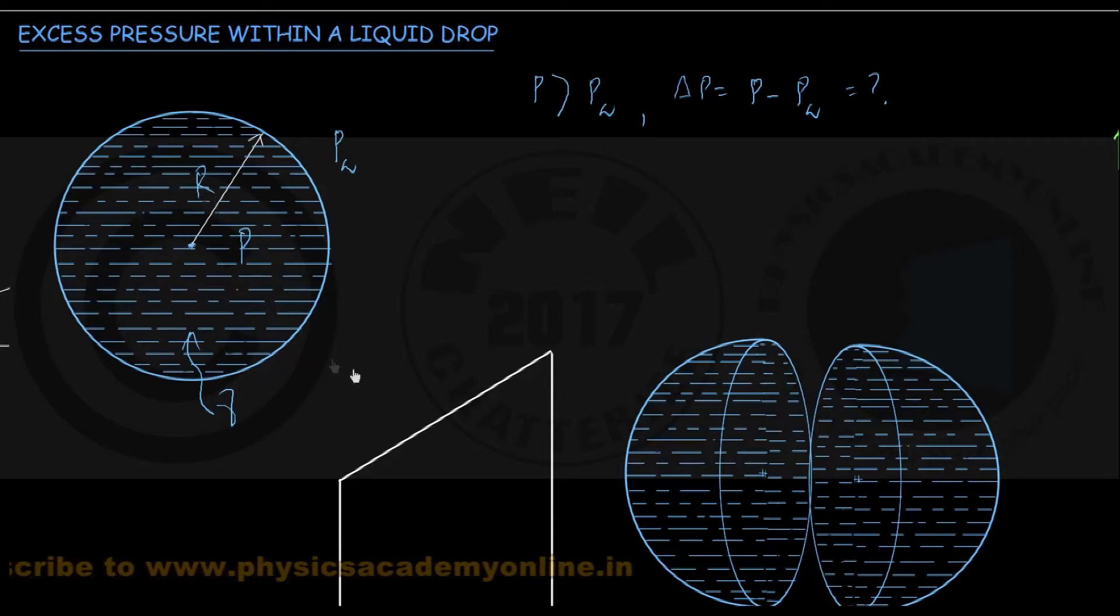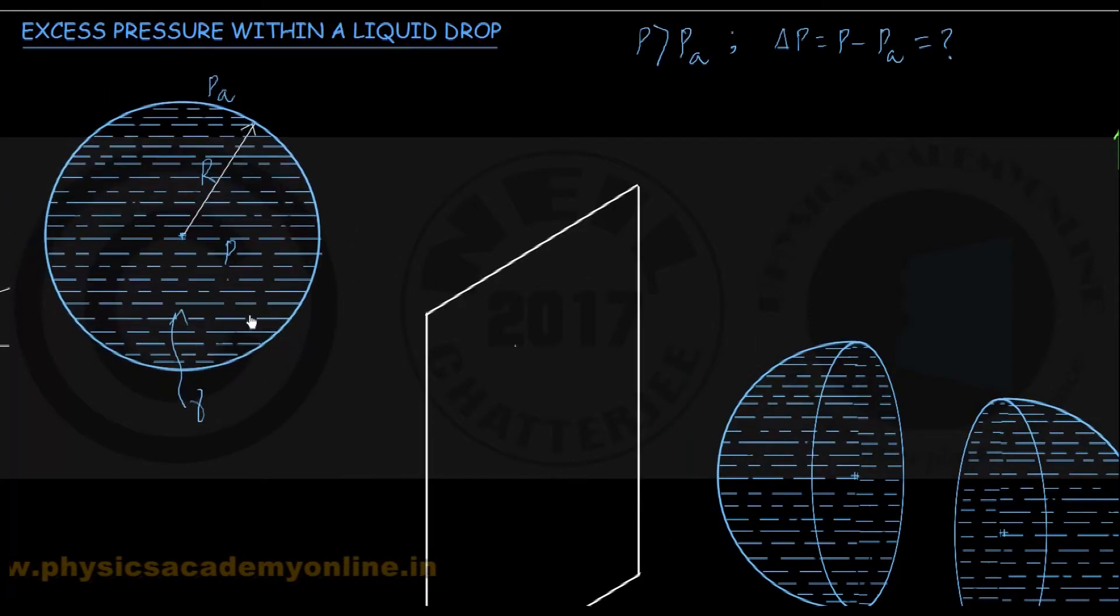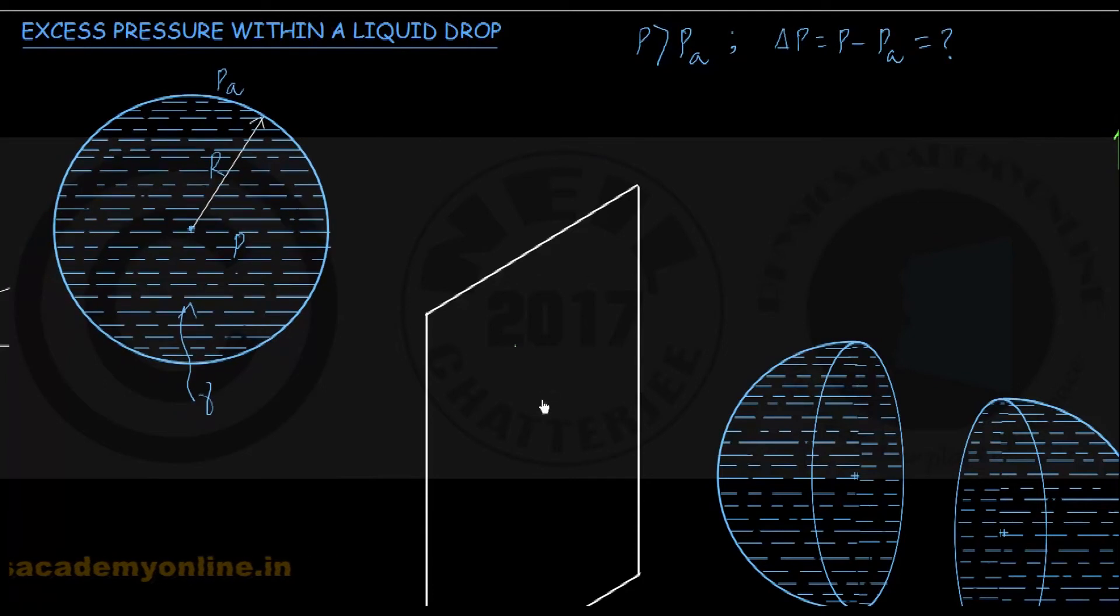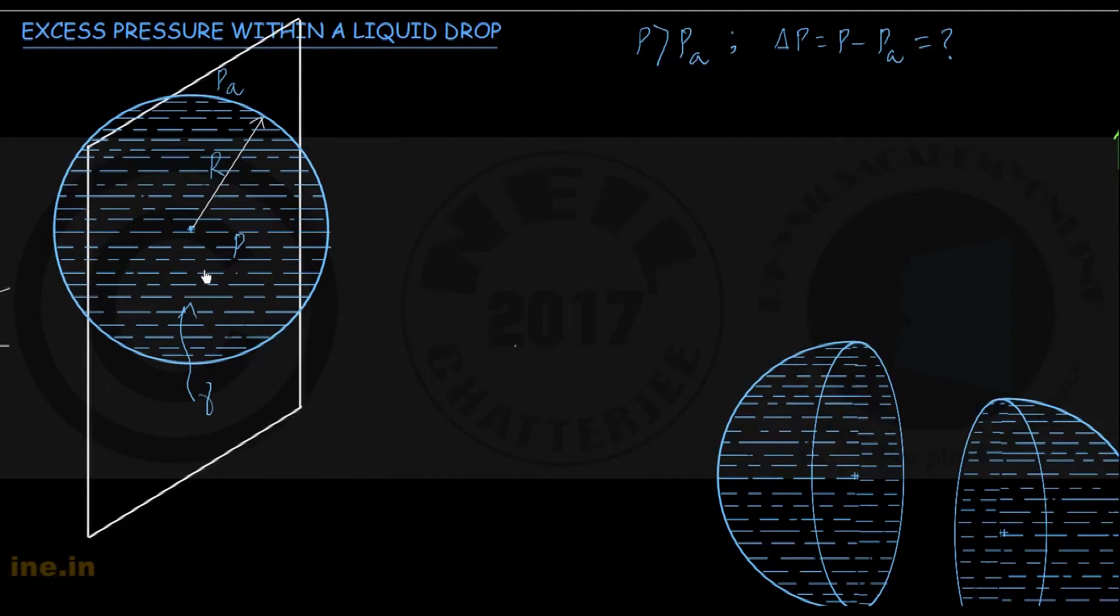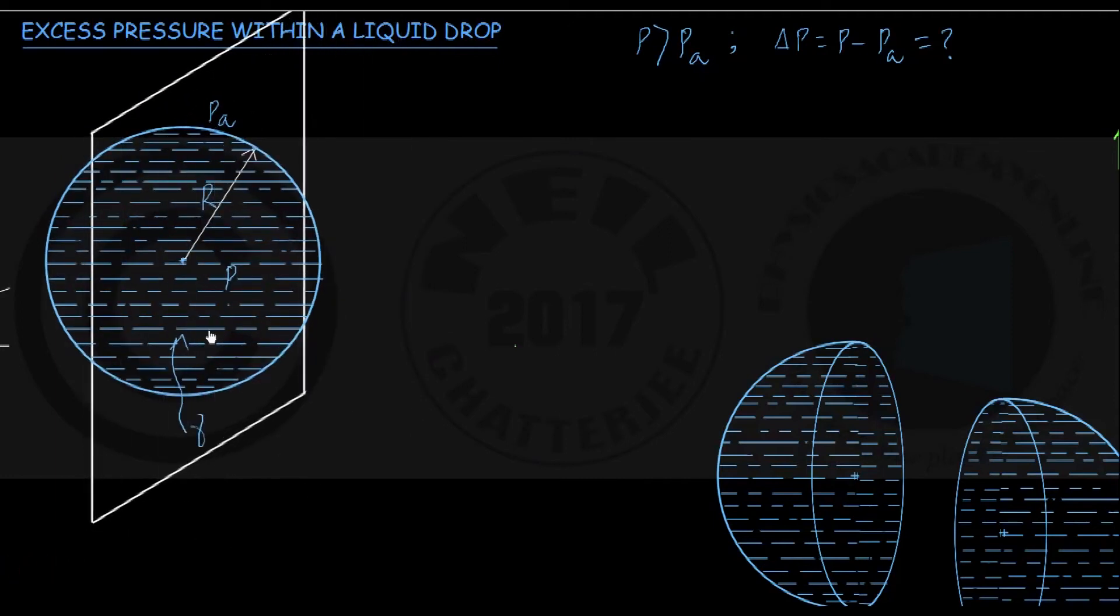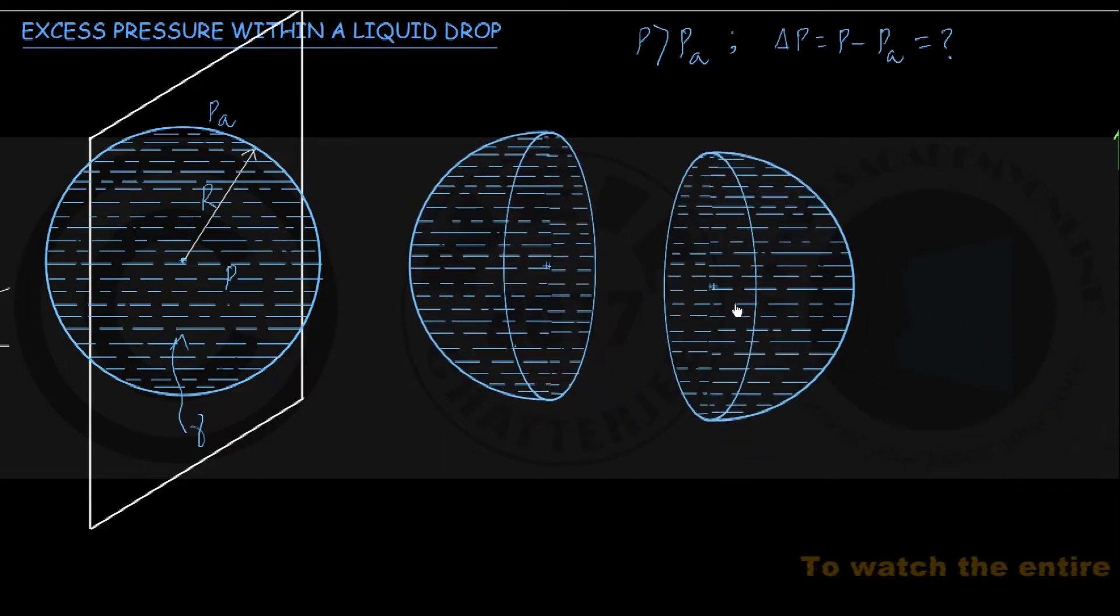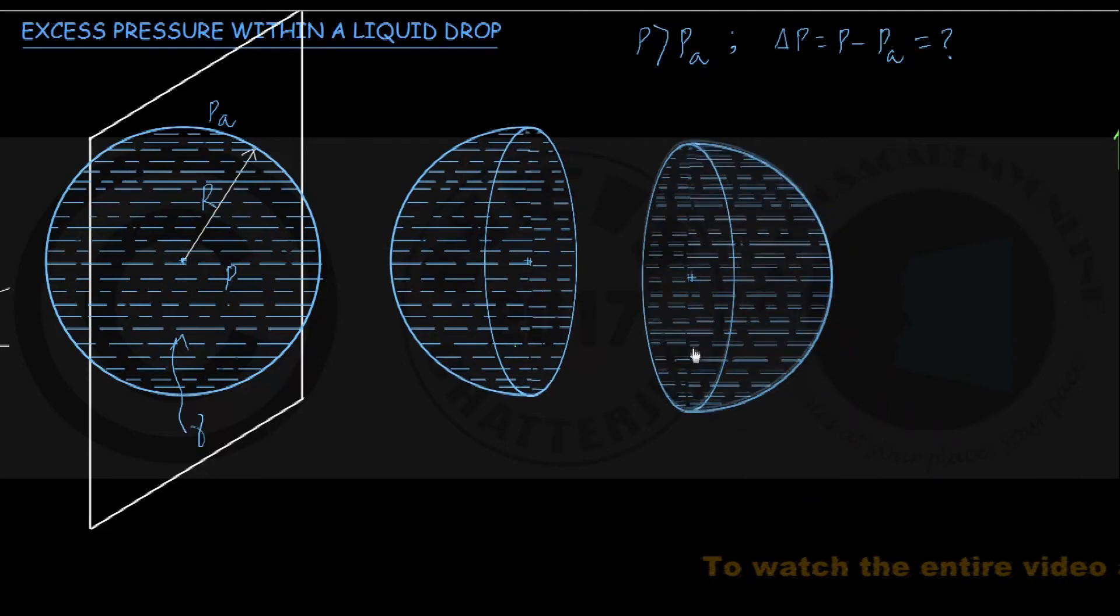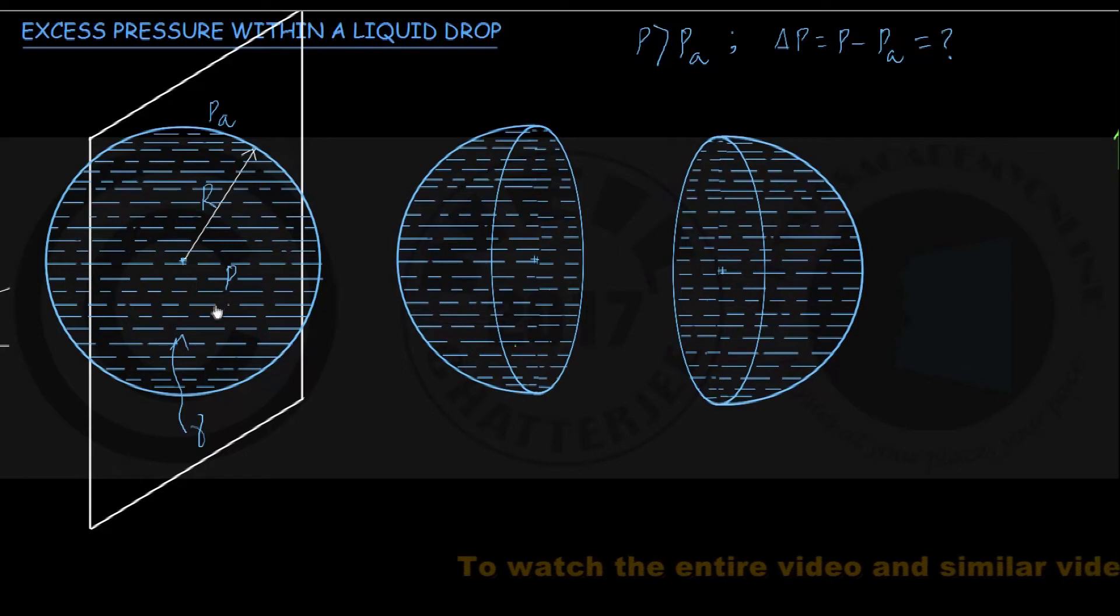We shall divide this liquid drop in imagination by a vertical plane passing through its center. This is the white outline of this imaginary vertical plane passing through center and dividing this liquid drop into two equal halves, that is, two equal hemispheres, as I am showing separately.